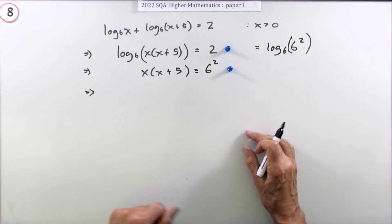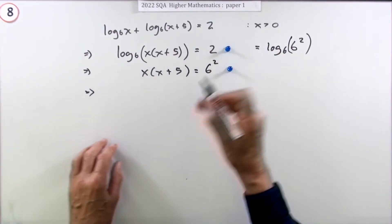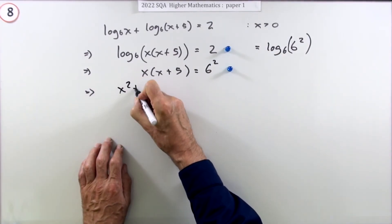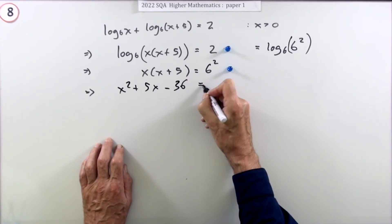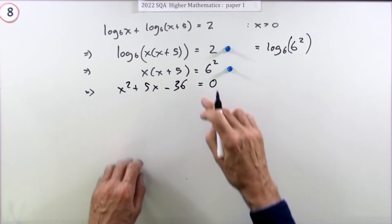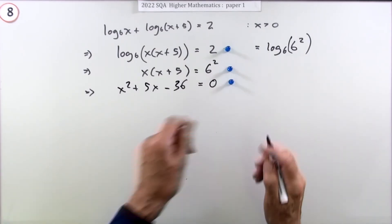Now you just spell that out: x² + 5x, that's 36, minus 36 equals zero. Doing that gets a mark. Now you've got to solve it.